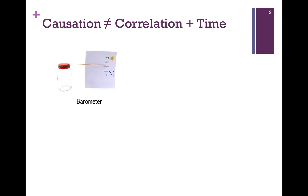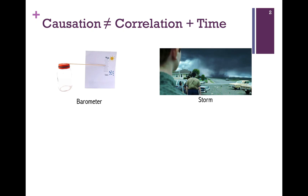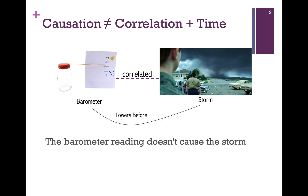Consider a barometer, and suppose that the reading on the barometer goes down before a storm occurs. So here we have a correlation, and also one thing happening before another, but clearly it's not the case that the barometer reading causes the storm. So we see that a correlation in time is not sufficient for causation. That being said, there is a causal explanation of the correlation: both the barometer and the storm depend on atmospheric pressure, so there's a common cause that explains the correlation.